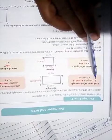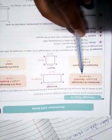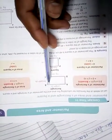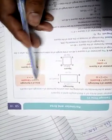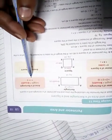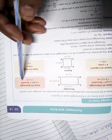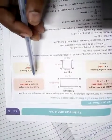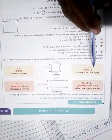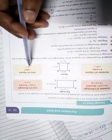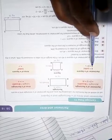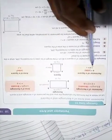Now let's discuss the perimeter and area of the rectangle and square. The perimeter of a rectangle is 2 × (length + breadth), meaning 2(L + B). The area of a rectangle is length × breadth, which is L × B. The perimeter of a square is 4 × side (4S), and the area of a square is side × side (S²).